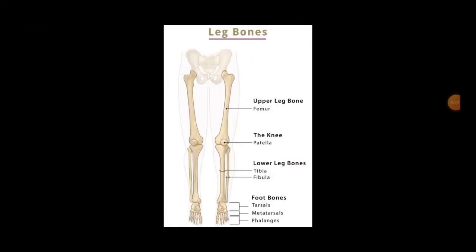Hello everyone, today we are going to learn about the lower extremity. The lower extremity is a part of your appendicular skeleton. Before this, we already covered the first part of the appendicular skeleton — the upper extremity — including the upper limb, arm, forearm, and hand.